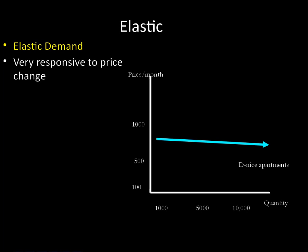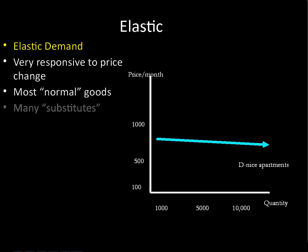Elastic demand means that consumers are very responsive to price change, so you really have to pay attention to this one if you face it in your business. Most normal goods face some kind of elastic demand. If a product has many substitutes, it's going to face elastic demand. Think about beef — if the price goes up by 20%, we're going to switch to pork, fish, or a veggie burger. A lot of products that have lots of substitutes face this very elastic demand because consumers will just switch to the other product.